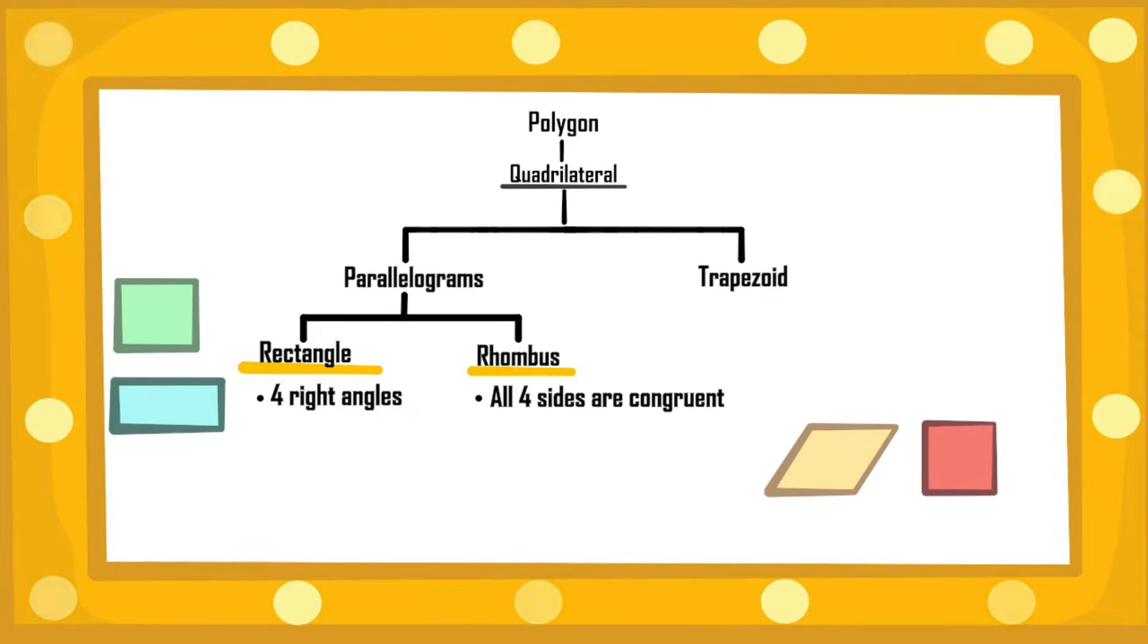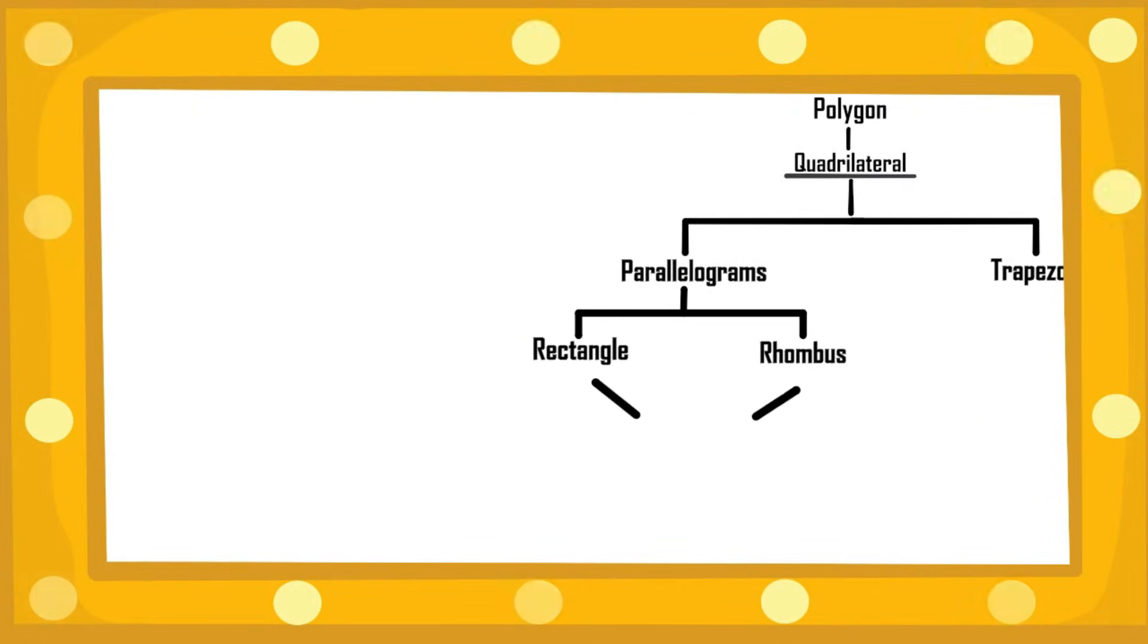But if it all describes a shape—it has two pairs of parallel sides and you can then discern that they're congruent and the angles are right—it's a parallelogram and rhombus and rectangle too. That would be a square, but the reverse wouldn't be true.